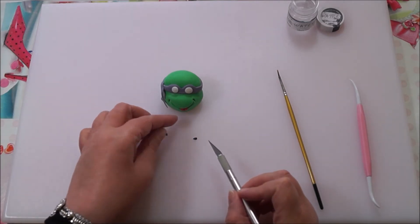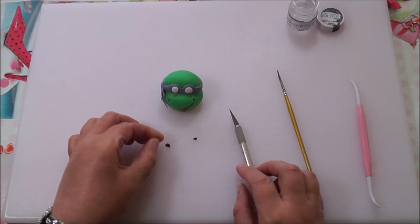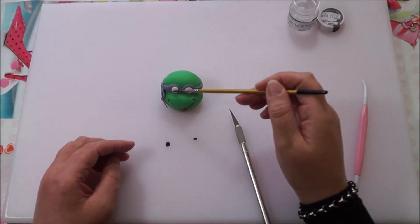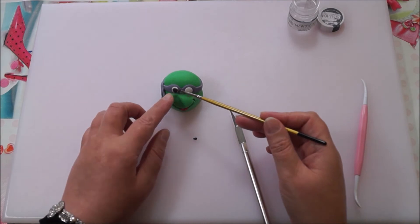Do the same for the black—two small pieces, squash them into little circles, and using a tiny bit of water, stick them on.